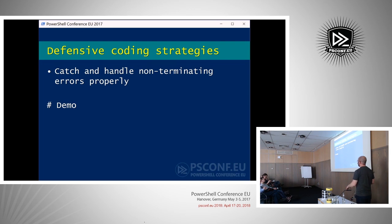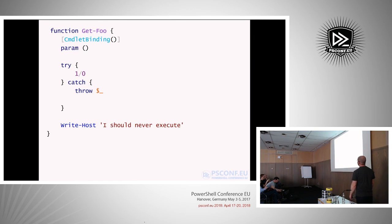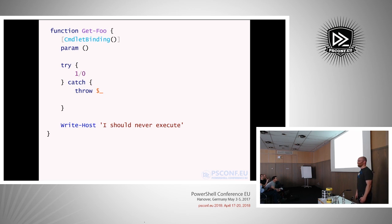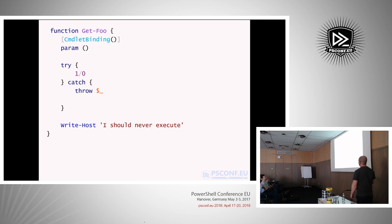Here's another trick an attacker could use to influence the way your functions execute, dealing with error handling. Consider this little function — it should always throw an exception and one divided by zero throws an exception. But if this function has CmdletBinding, I can call it with -ErrorAction SilentlyContinue. Then this throw is treated as a non-terminating exception and I can then reach the code after it. Nothing malicious here by itself, but it's a primitive an attacker might leverage if it gets them to a vulnerable piece of code — like a call to Add-Type that could be influenced. To be more explicit: if this is something you absolutely want to always treat as a terminating exception, just return after your throw statement.